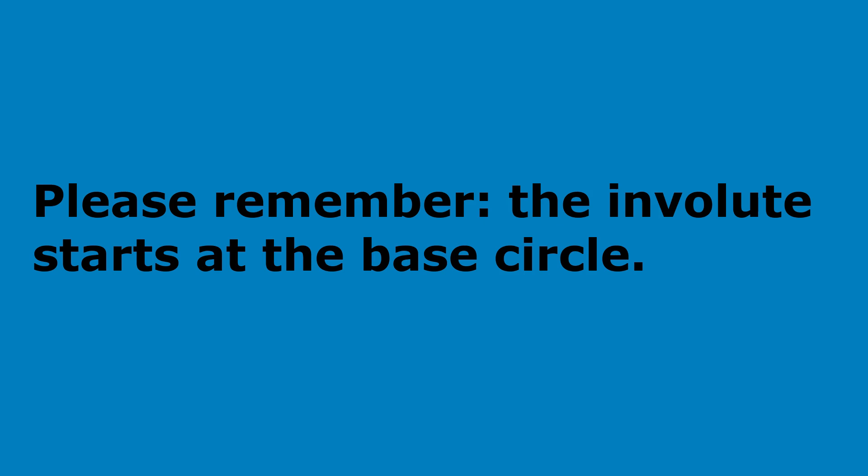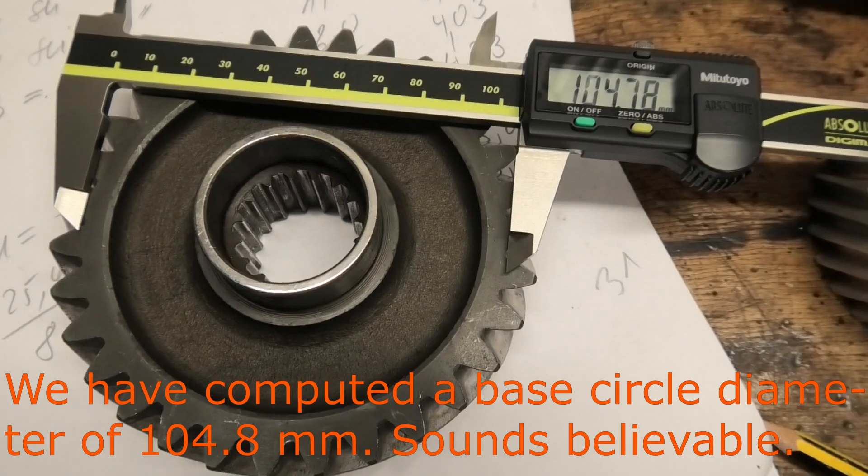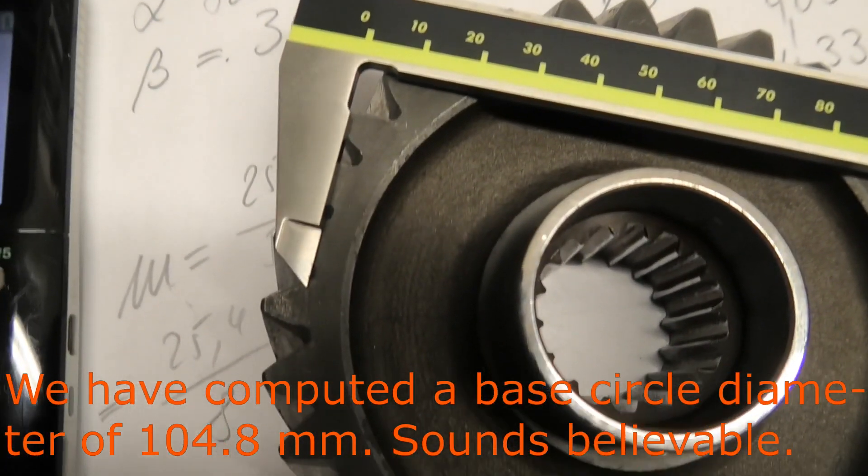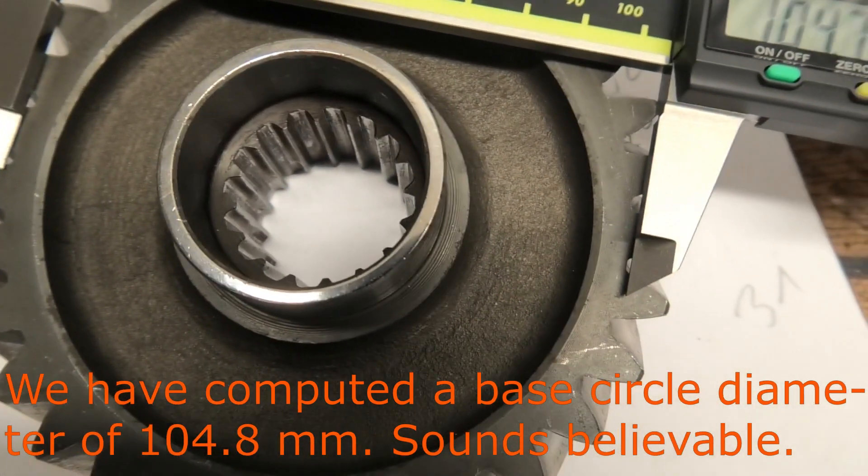Please remember, the involute starts at the base circle. We have computed a base circle diameter of 104.8 millimeters. Sounds believable.